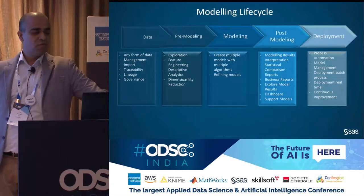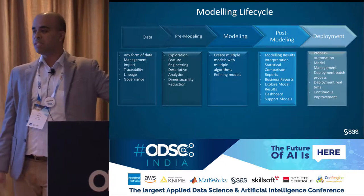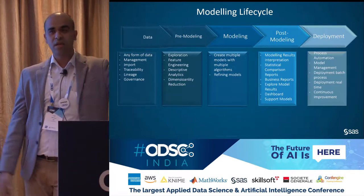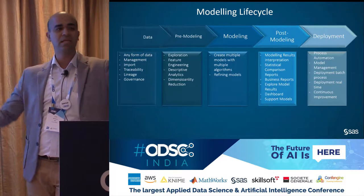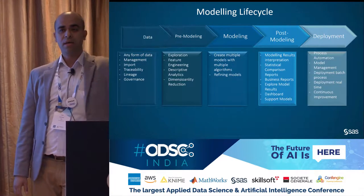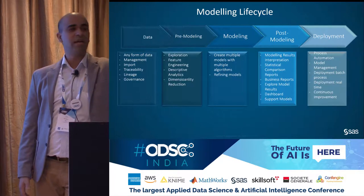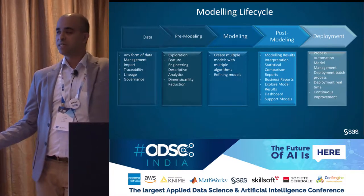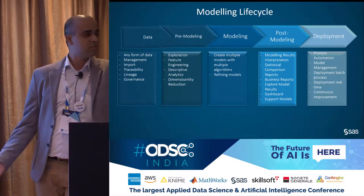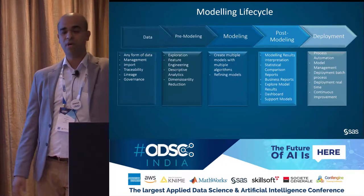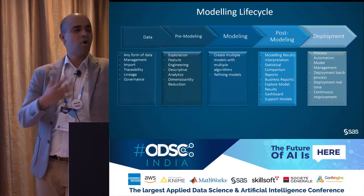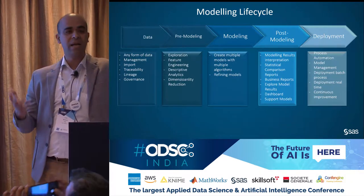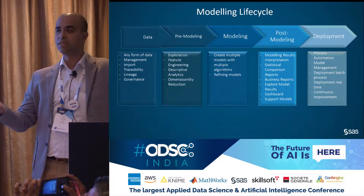The first and foremost step of building any machine learning model — classical machine learning models, statistical models, even a deep learning model — is that you need data to work upon. You're getting data not just from structured data sources as traditionally that's what we've been working on. We are getting data in the form of text, images, and videos. That really forms the engine for you to build any machine learning or statistical model.